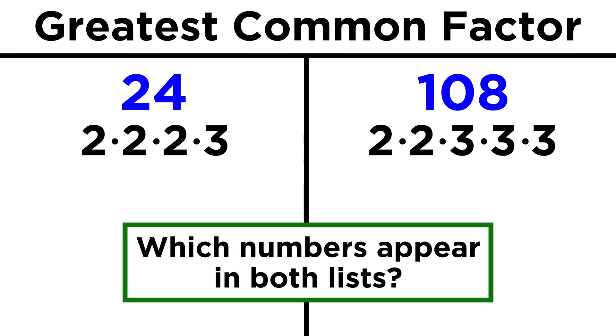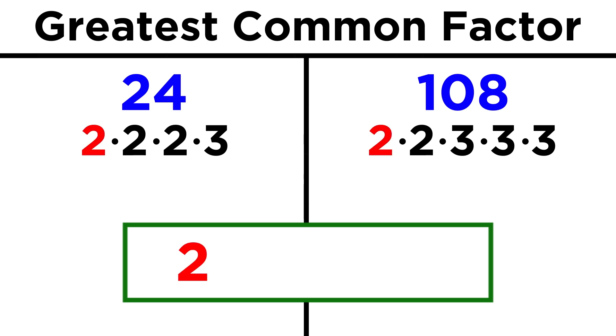Now we see what we have in both lists. We take one of the twos, another two, and a three, and that's all we can do. So two times two times three is twelve, and that's the greatest common factor for these two numbers.